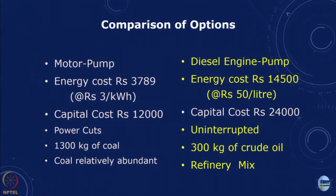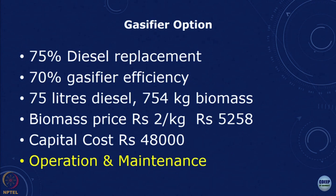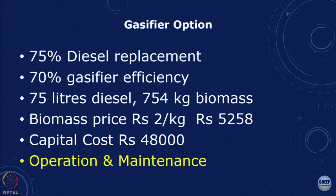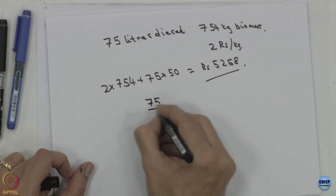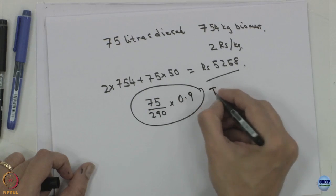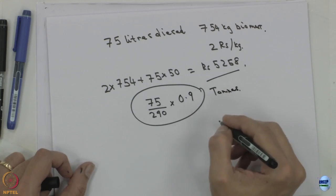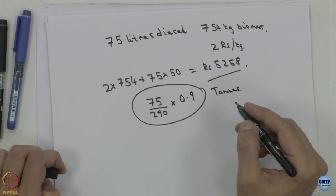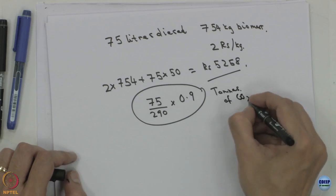Comparing with the diesel engine pump: instead of 14,500, we are now getting 5,258, so the operating cost reduces significantly. However, capital cost increases because of the gasifier, and it is more complex in terms of operation and maintenance. In terms of CO2, emissions reduce because biomass is considered carbon neutral — roughly 75 divided by 290 times 0.9 tonnes, a significant reduction.